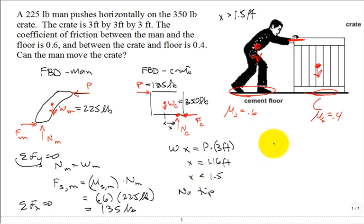What about slip? We say okay, if P is equal to 135 pounds, then what is Fs with the crate? The static or the maximum with the crate would be μs with the crate times the normal of the crate. The normal of the crate, sum of the forces in the Y, is equal to the weight of the crate. So 0.4 times 350 pounds, the maximum static friction coefficient for the bottom of the crate: 0.4 times 350 is 140 pounds.